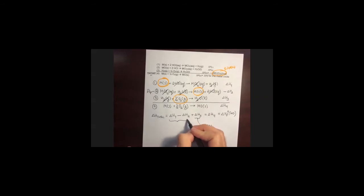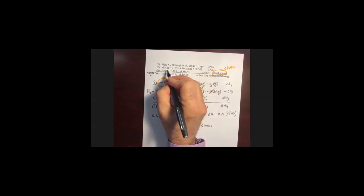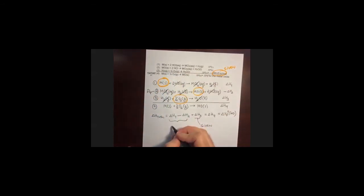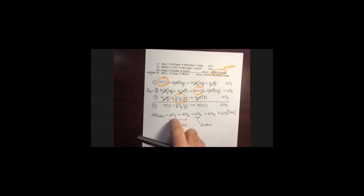Delta H3 is the heat of formation of water, which is already given to us. The values we need to find are the enthalpies of the reactions of the metal with HCl and the metal oxide with HCl — those are the ones we are going to have to measure. That is essentially the procedure for today: this is what our lab is about. To find those enthalpies, we're going to use a calorimeter.